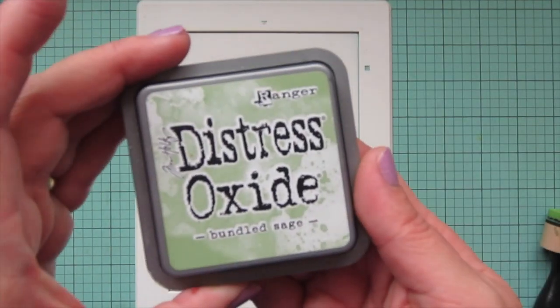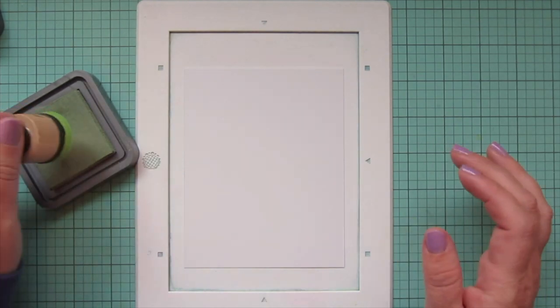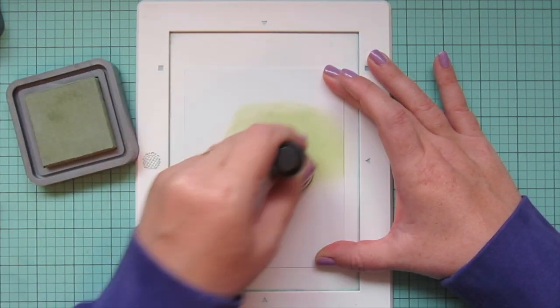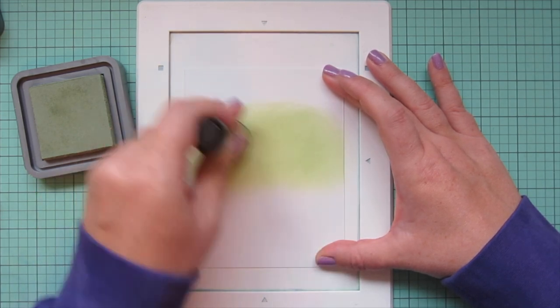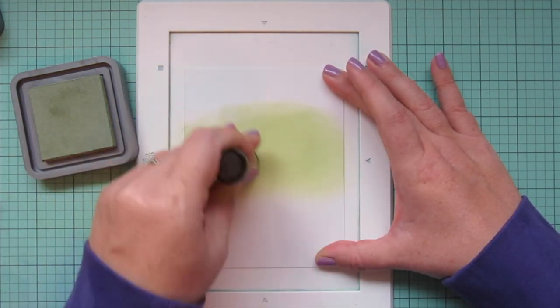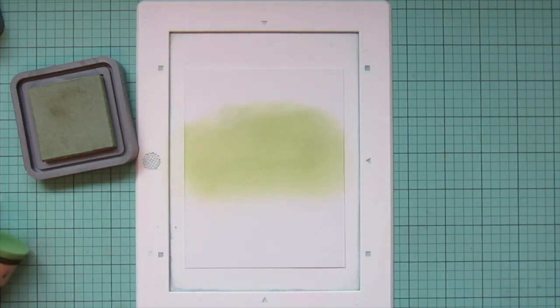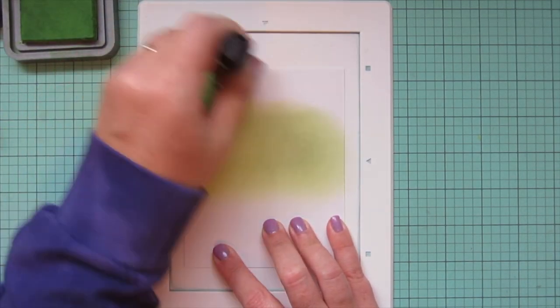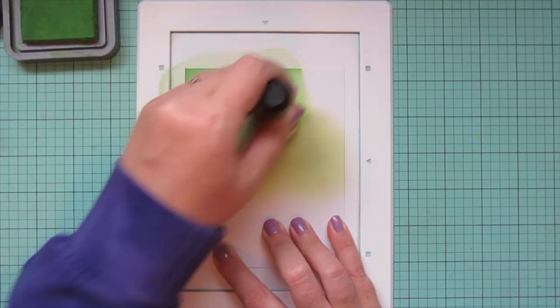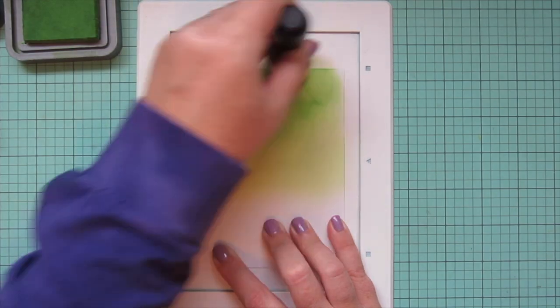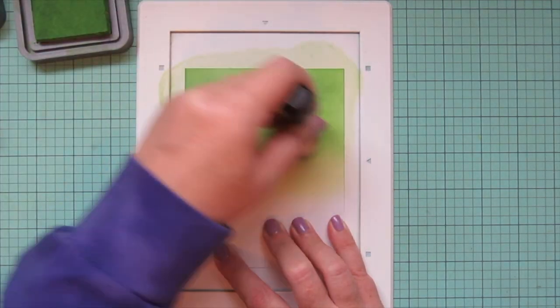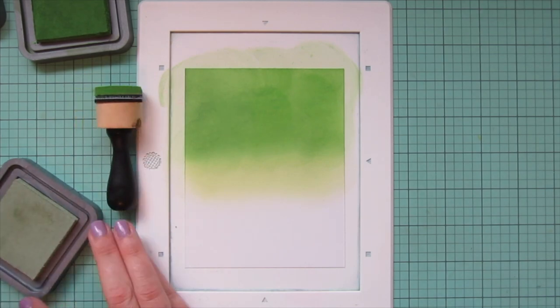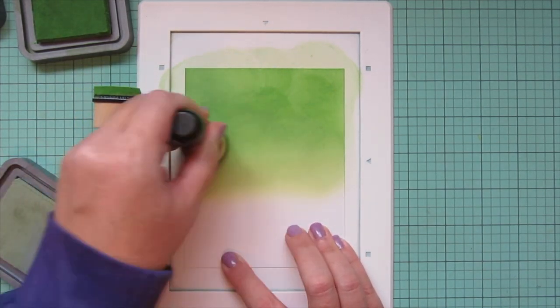For my background I'm going to start with a piece of Bristol smooth surface cardstock and I want to create kind of like an ombre background that is going to go down about two-thirds of the card front so my lightest shade is going to be bundled sage so I'm blending that on to kind of give me a line of where I want to stop on the card and then I'm going to come in with my mid-tone which is going to be mowed lawn and I'm going to bring that in from the top and cover the top edge of that bundled sage so that I get a nice blend between those shades and I will go back and forth between those two ink blending tools to kind of smooth out that transition and make it a bit more seamless.